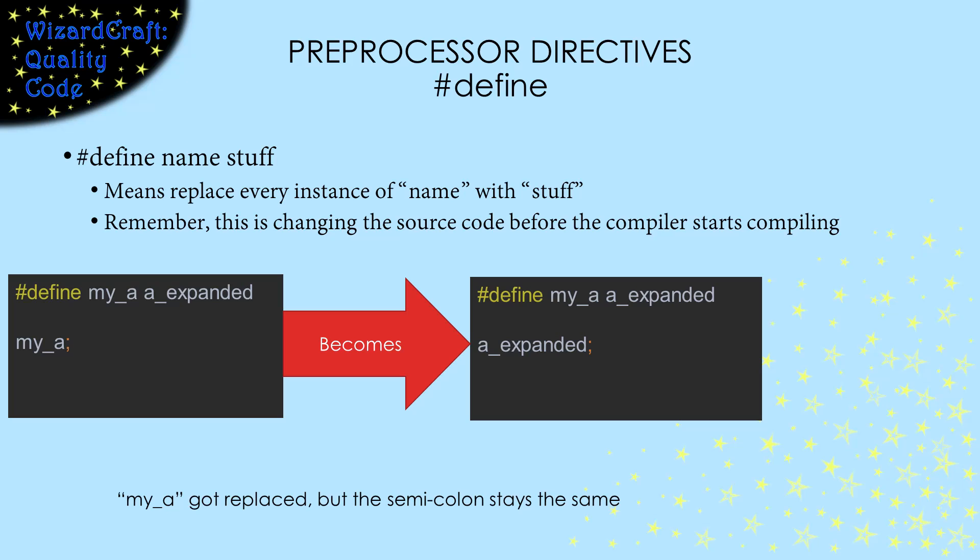The second preprocessor directive I want to talk about is pound define, which tells the preprocessor to replace text in our source file. The format of a pound define instruction is always pound define, name, stuff. And it tells the preprocessor to replace every time we used name with stuff. Now that sounds like it would be pretty trivial to use, but there are lots of little tricks to using pound defines well. So watch all the way to the end of the videos to see all the little details.